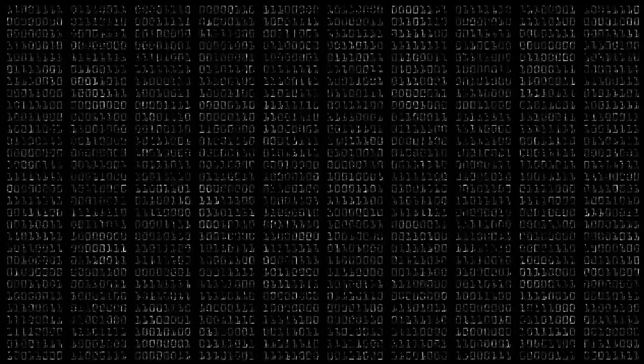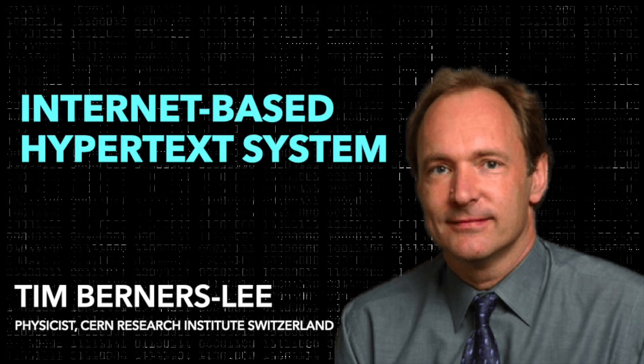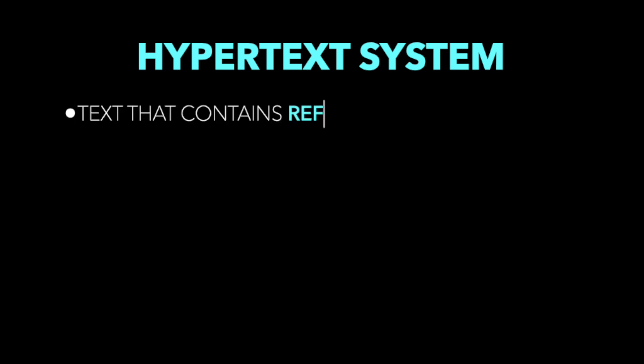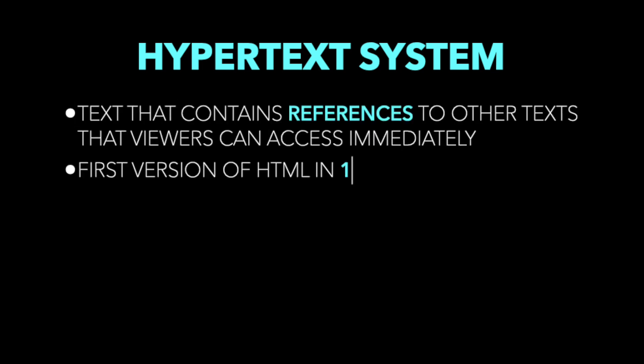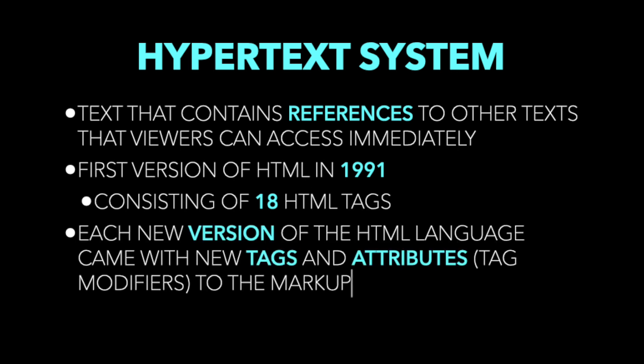HTML was invented by Tim Berners-Lee, a physicist at the CERN Research Institute in Switzerland. He came up with the idea for an internet-based hypertext system. Hypertext means a text that contains references or links to other texts that viewers can access immediately. He published the first version of HTML in 1991, consisting of 18 HTML tags.